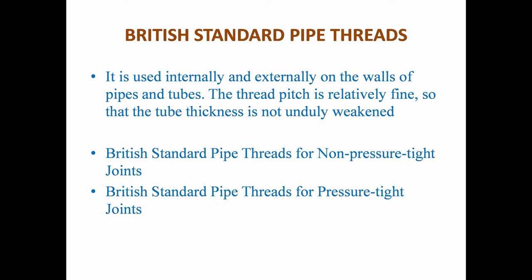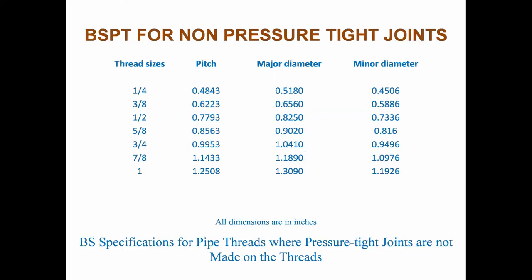BSPT is used internally and externally on the walls of pipes and tubes. The thread pitch is relatively fine so that the tube thickness is not unduly weakened. There are two categories: British Standard pipe threads for non-pressure tight joints, and British Standard pipe threads for pressure tight joints.